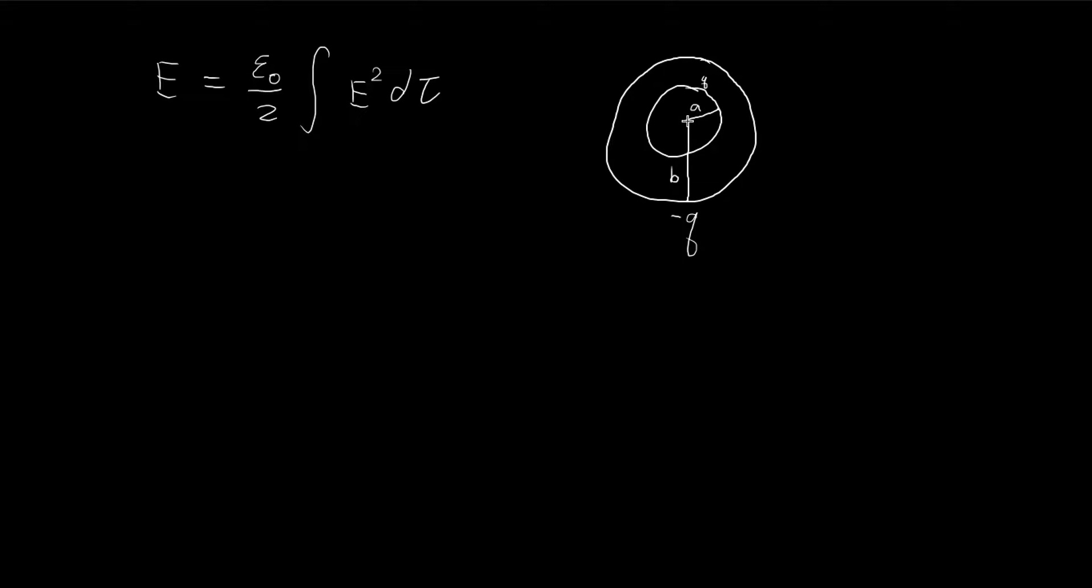Thanks to the shell theorem we know that the electric field inside here is zero. The electric field in this part is only going to come from this shell over here, and it's going to act like a point particle. So the electric field in this section here is going to be equal to this. So r is going to be the distance from the center to wherever we are.